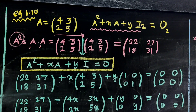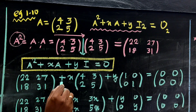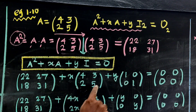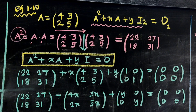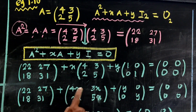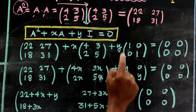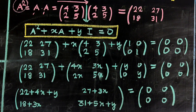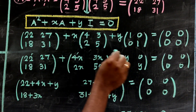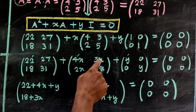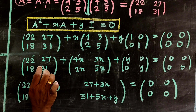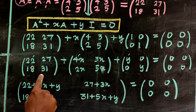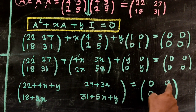If A is a matrix, the inverse equals a matrix. If A equals the zero matrix, then x is multiplied giving 4x, 3x, 2x, 5x, and y gives [[y, 0], [0, y]]. Now in the 2×2 matrix, first element: 22 plus 4x plus y, second: 27 plus 3x plus 0, third: 18 plus 2x plus 0, fourth: 31 plus 5x plus y, all equal to zero.